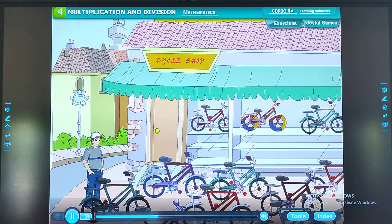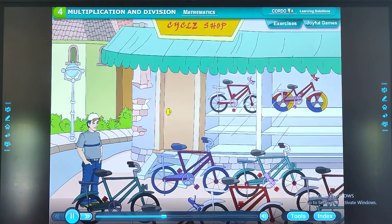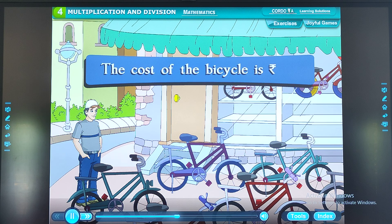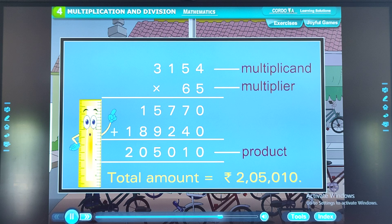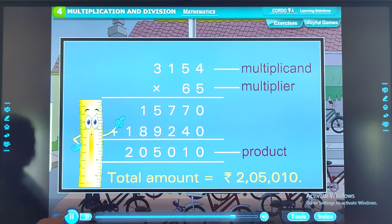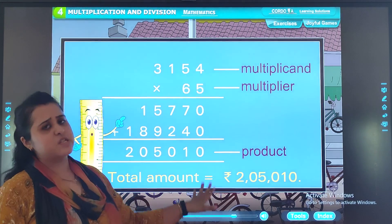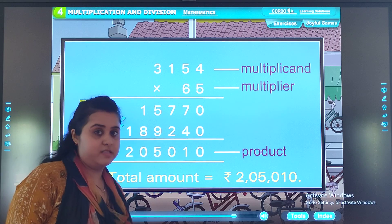A shopkeeper bought 65 bicycles to sell in the market. If the cost of a bicycle is 3,154, find the amount that he has to pay for all bicycles. Multiplicand, multiplier, product, total. We know this already. We have covered this.